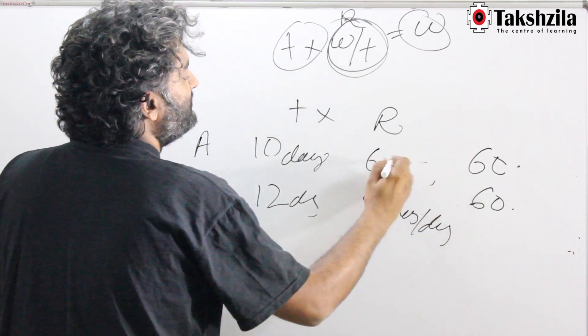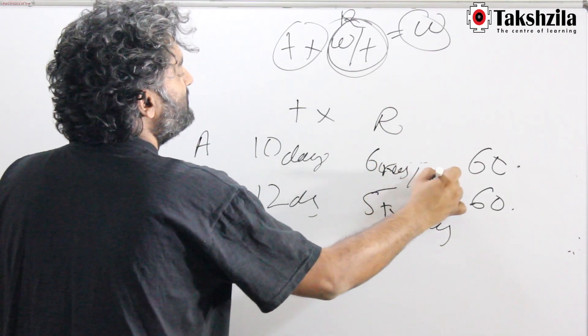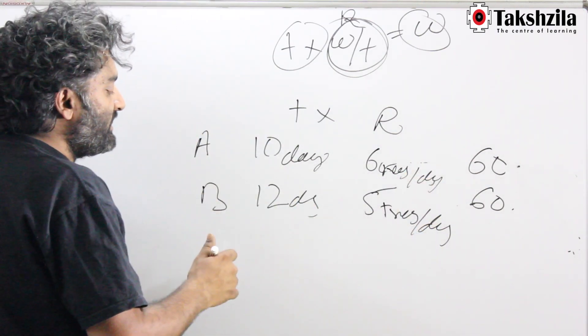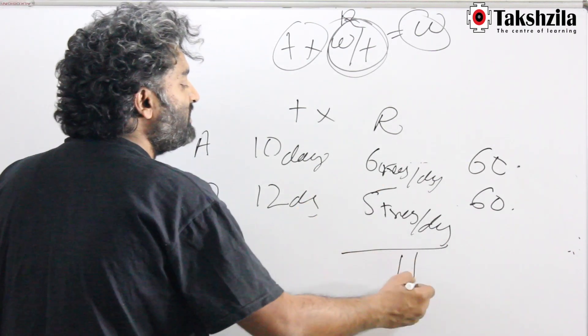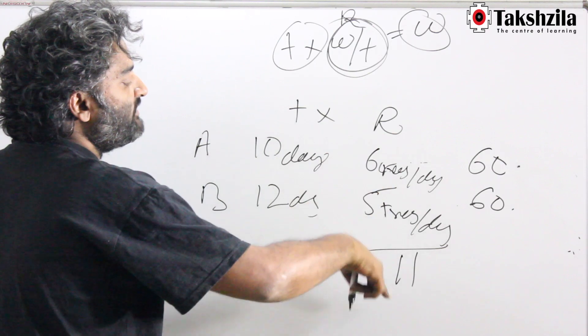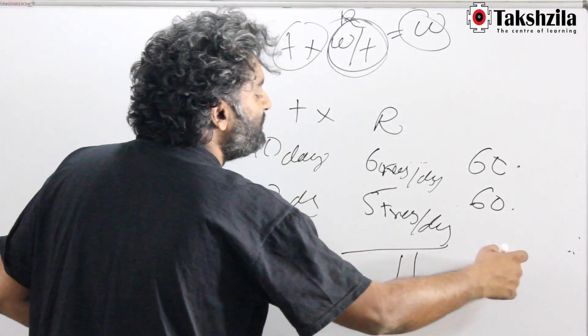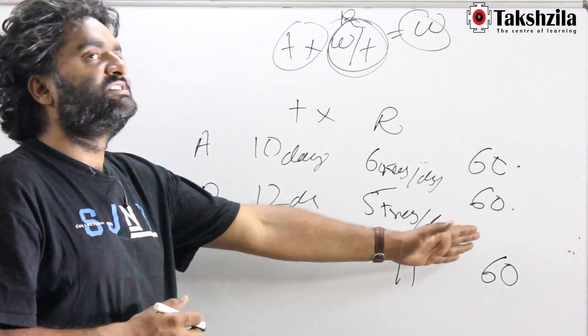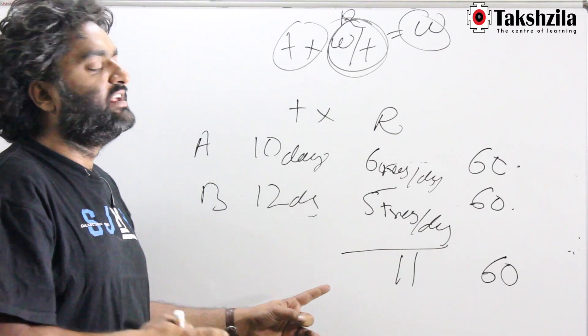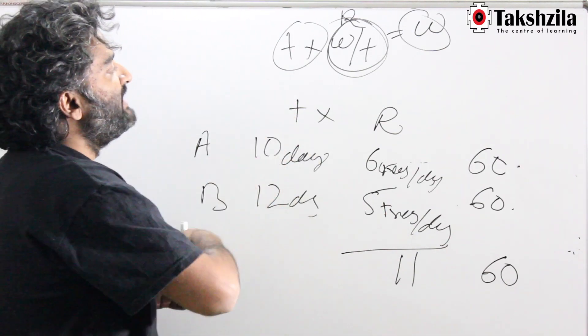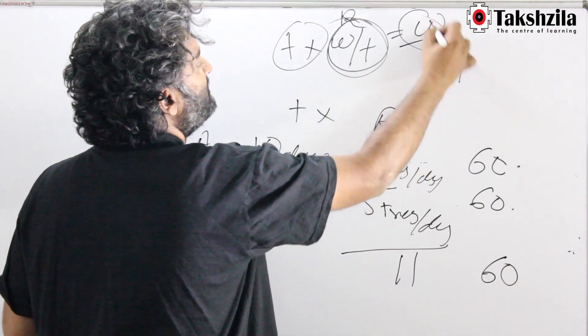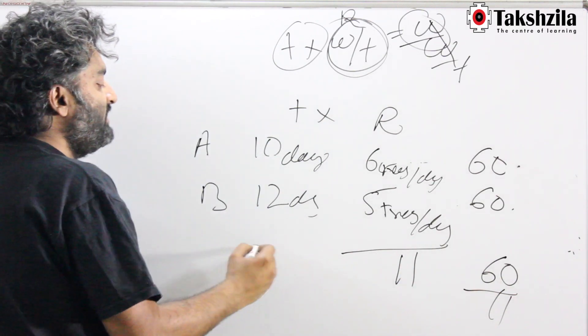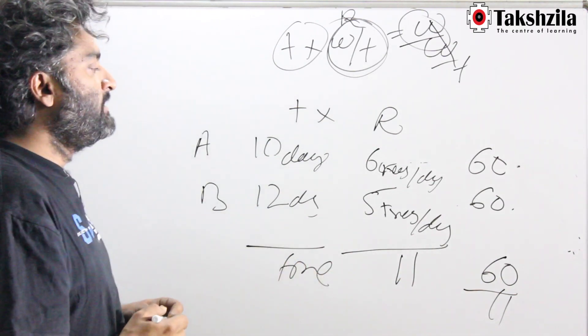6 trees per day and 5 trees per day. If both of them were working together, in 1 day, how many trees would they cut? They would cut 11 trees. So the combined rate of A and B is 11 trees per day. And 60 trees have to be cut. How much time will it take? I know 60 trees have to be cut. They are cutting 11 trees in 1 day. Work should be divided by rate to get the time. So 60 by 11 would be my answer.